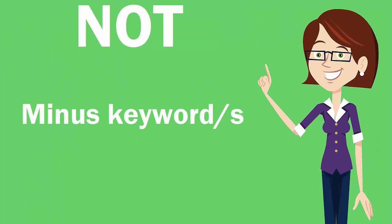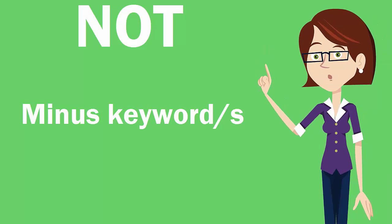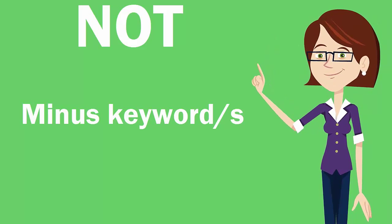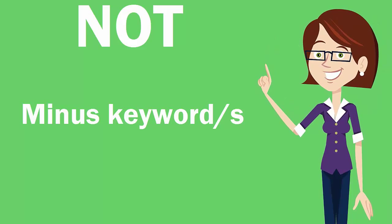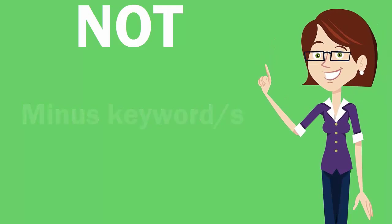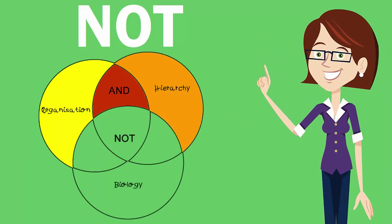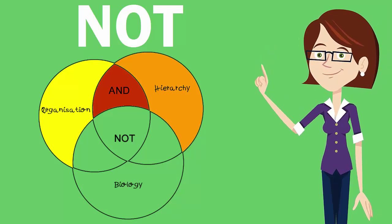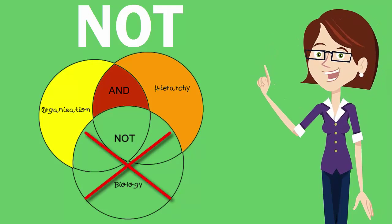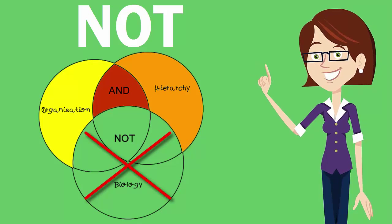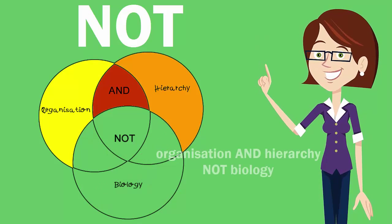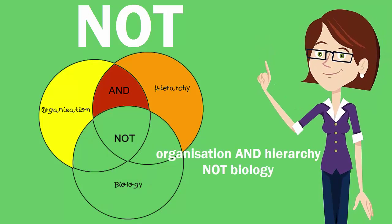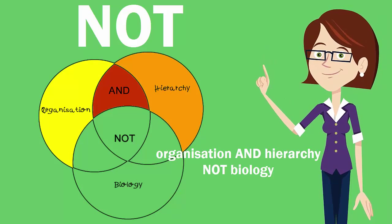NOT is when you want to exclude a keyword from your results because you're retrieving results that are related but aren't actually on your topic. For example, if searching 'organization and hierarchy', you'll get results for business and biology. To cut out one of those results, you would word your search like this: 'organization and hierarchy NOT biology'.